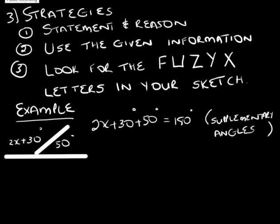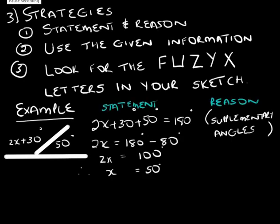We can go ahead and make the statement that 2x plus 30 plus 50 degrees is equal to 180 degrees, because they are supplementary angles — angles on a straight line. So 2x is equal to 180 degrees minus 80 degrees, and 2x will be equal to 100.